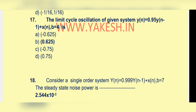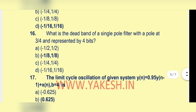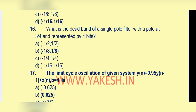Review: The limit cycle oscillation of system y(n) = 0.95·y(n−1) + x(n), b equal to 4 — answer is 0.625. Consider single order system y(n) = 0.999·y(n−1) + x(n), b equal to 7 — steady state noise power is 2.544 × 10^(−3). Dead band of single pole filter with pole at 3/4, 4 bits — option b: minus 1/8 to 1/8.